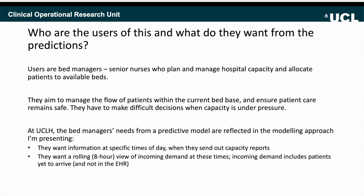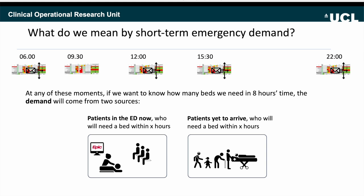To coordinate thinking about capacity, bed managers have specific times of day when they have so-called flow huddles, where they review incoming demand and outgoing patients and consider the state of the hospital and send out capacity reports. They would ideally have a rolling eight-hour view of incoming demand at these times rather than a view up to midnight, which is what's commonly done. With a rolling eight-hour demand window, you need to think about not only the patients in the emergency department now but also the ones yet to arrive — so we have two models: who's in now and who might arrive and be admitted in the next eight hours.